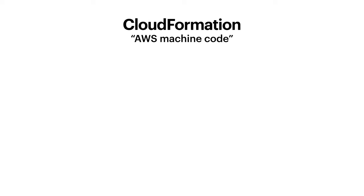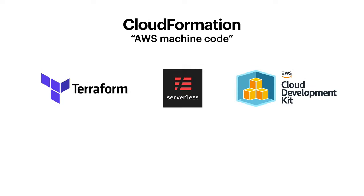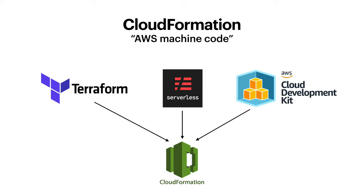CloudFormation is a bit like AWS machine code — a foundation layer that describes all the resources in a stack in your account. There are high-level tools that compile down into CloudFormation, such as Terraform, Serverless, and CDK. These tools abstract out some of the details of writing CloudFormation by hand and let you describe resources in a more abstract, succinct fashion.